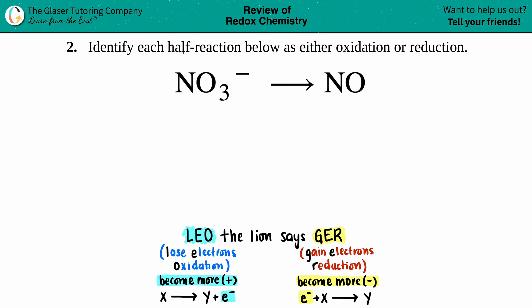Number two: identify each half reaction below as either oxidation or reduction. We have NO3- which will yield NO. Whenever we're dealing with oxidation or reduction, or if they say something like redox...